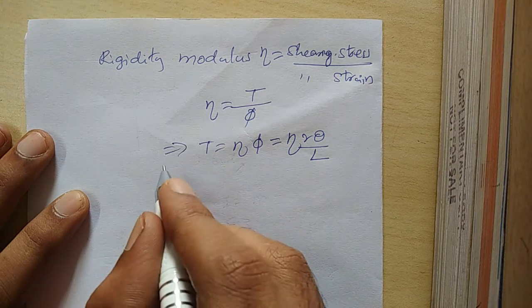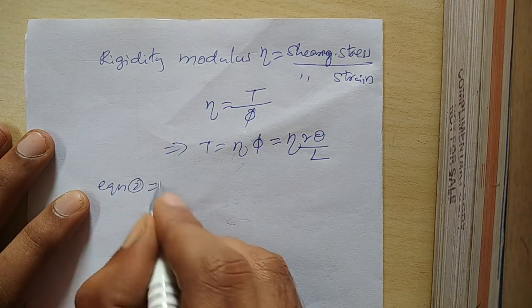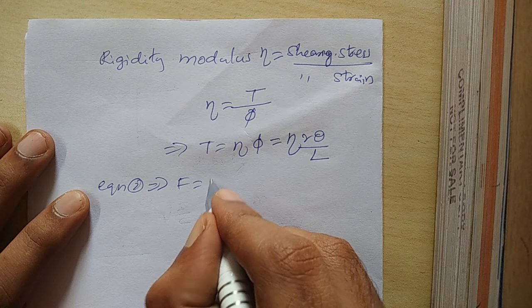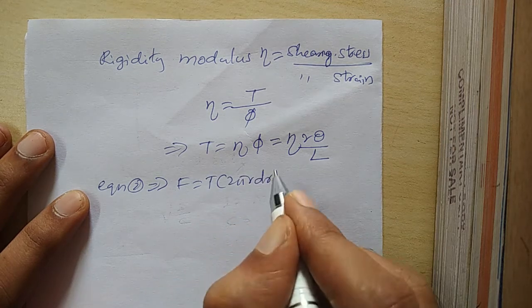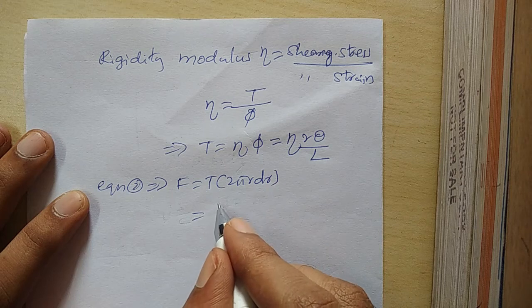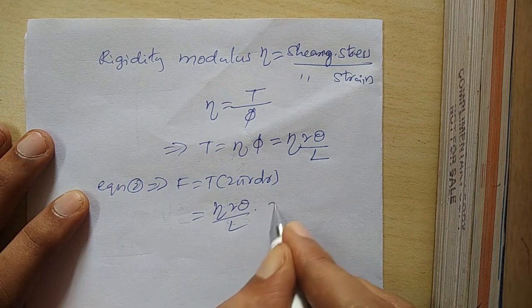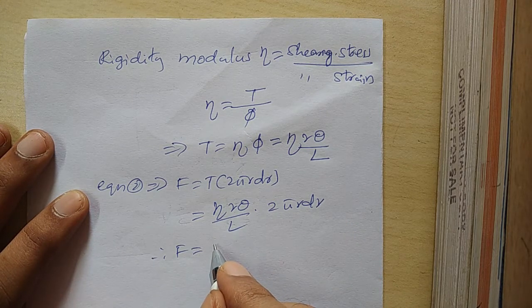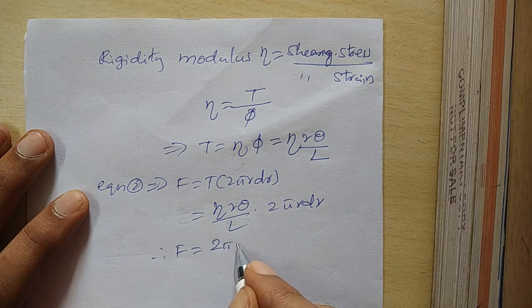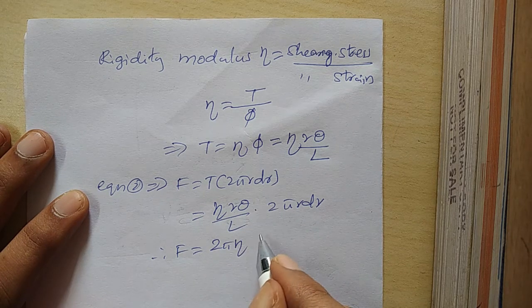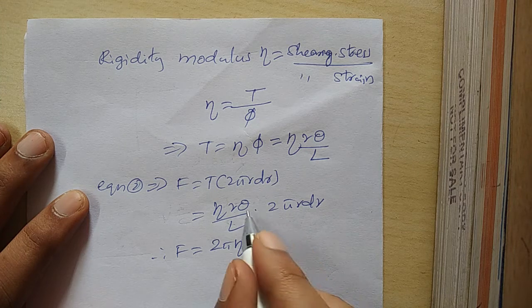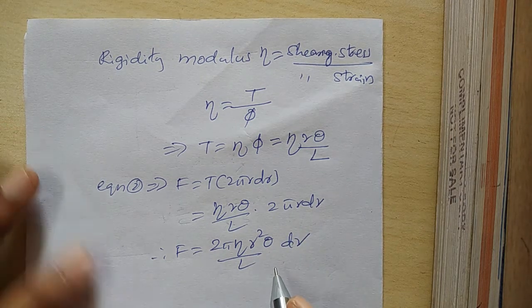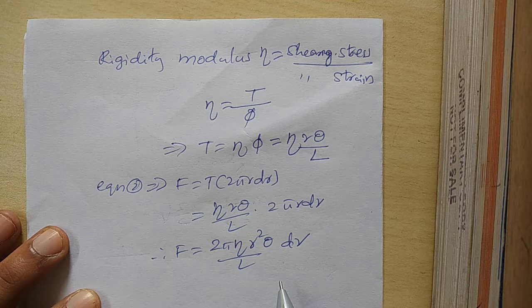From equation 2, the shearing force F = T × 2πr dr. Substituting the value of T, we get F = (ηrθ/L) × 2πr dr, therefore F = 2πη r²θ/L × dr. This is the expression for the shearing force on one cylindrical layer.